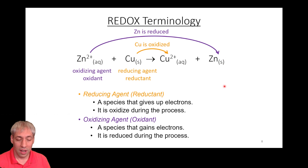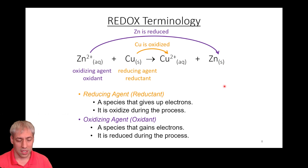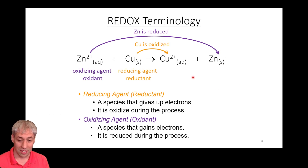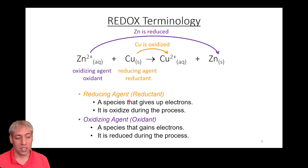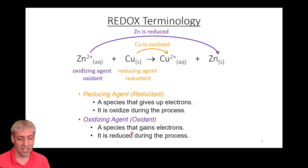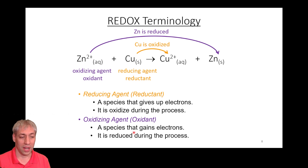To summarize the terminology: oxidation is the process of losing electrons, reduction is the process of gaining electrons, the reducing agent gives those electrons, and the oxidizing agent takes those electrons away.